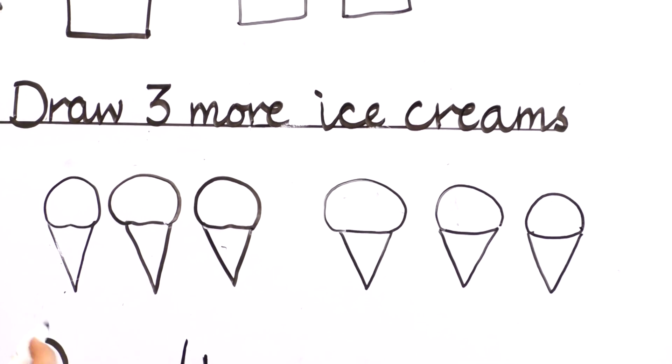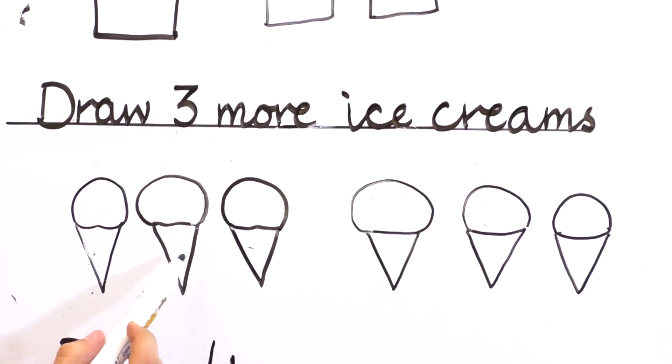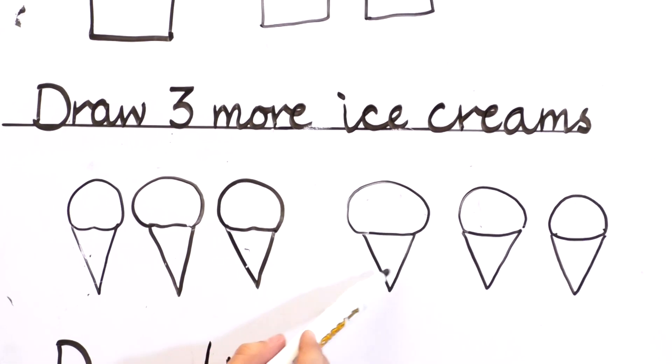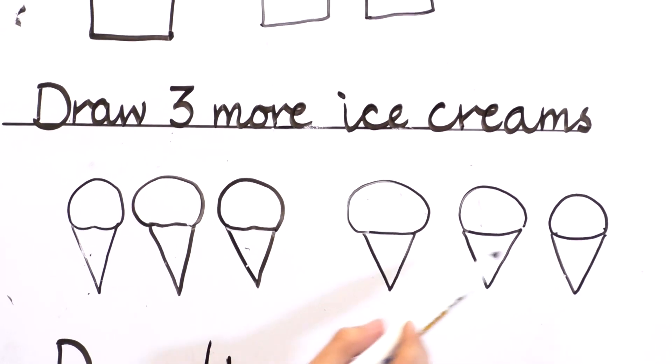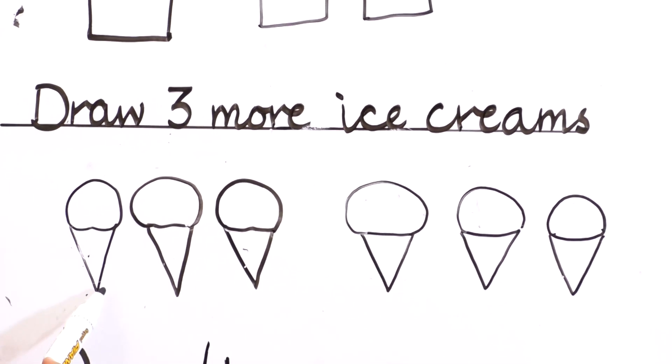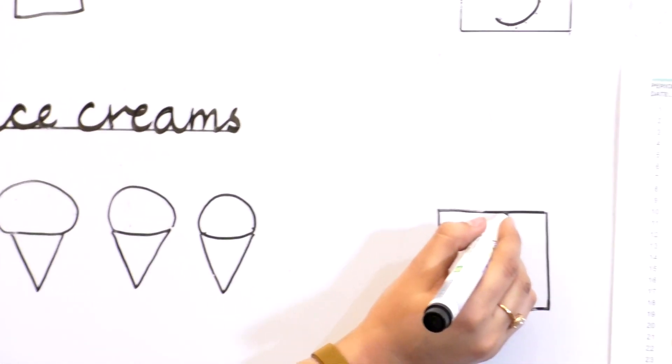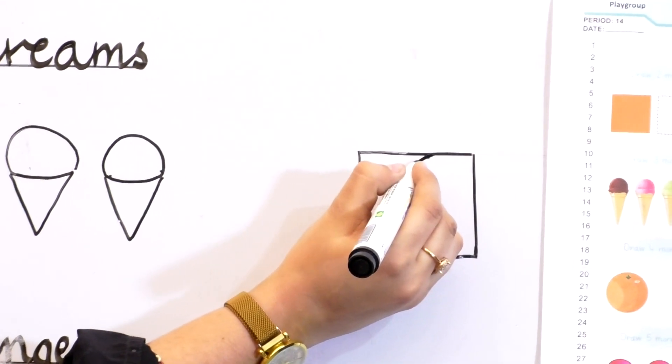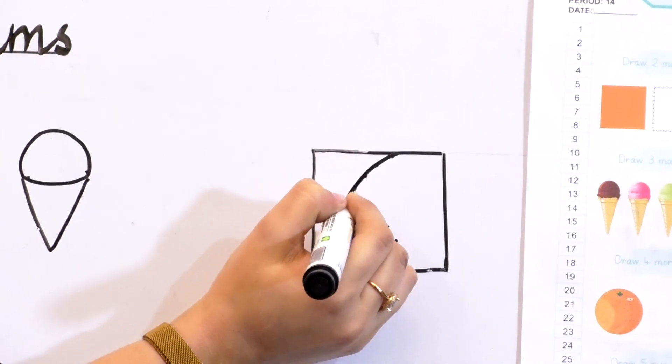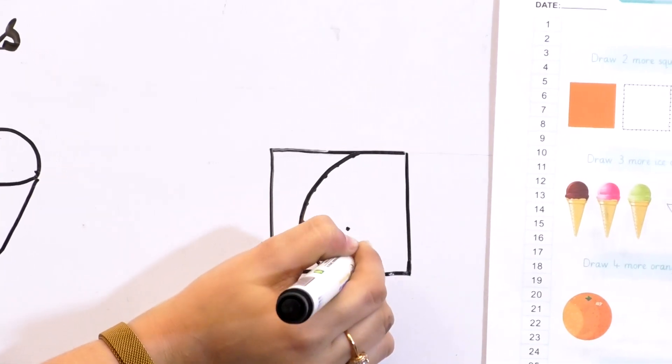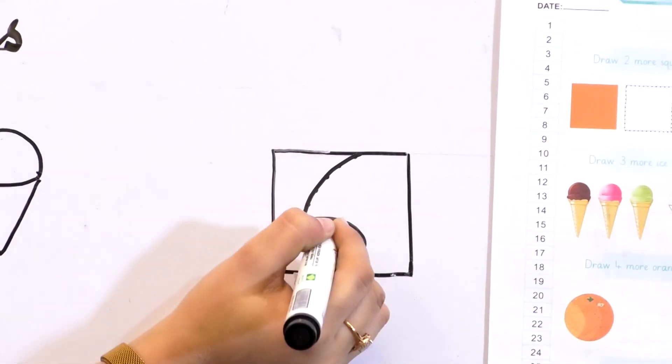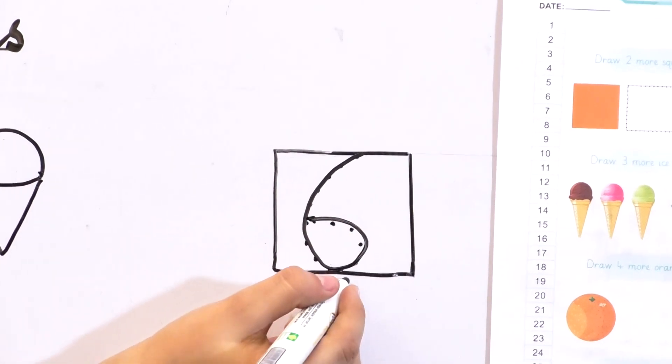Let's count it again: one, two, three, four, five, six. How many ice creams we have? Six ice creams. Let's try it in the box. Make a curve and join with it. It's number six.